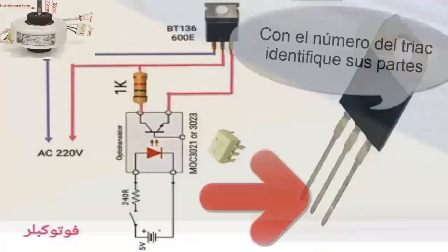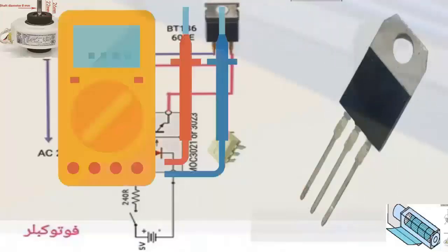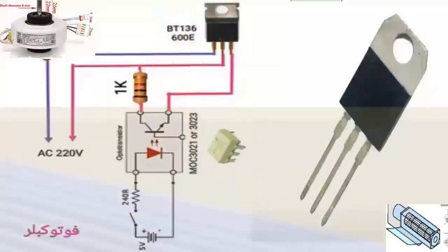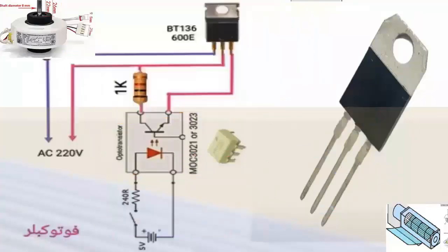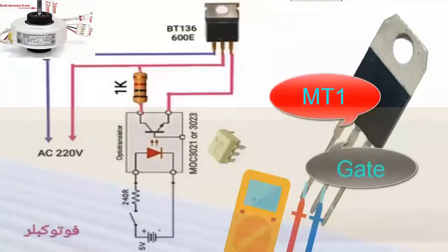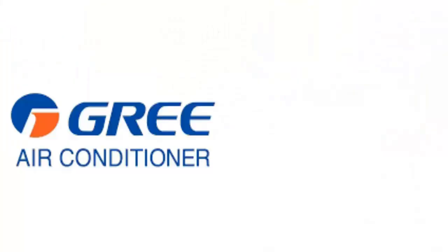4. TRIAC Failure: The TRIAC, located on the electronic board, is responsible for controlling all fan speeds. Identify the TRIAC pins using the serial number and measure the resistance between T1 and T2, which should be infinite. Then measure the resistance between T1 and the gate — the resistance should be low, around 200 ohms.